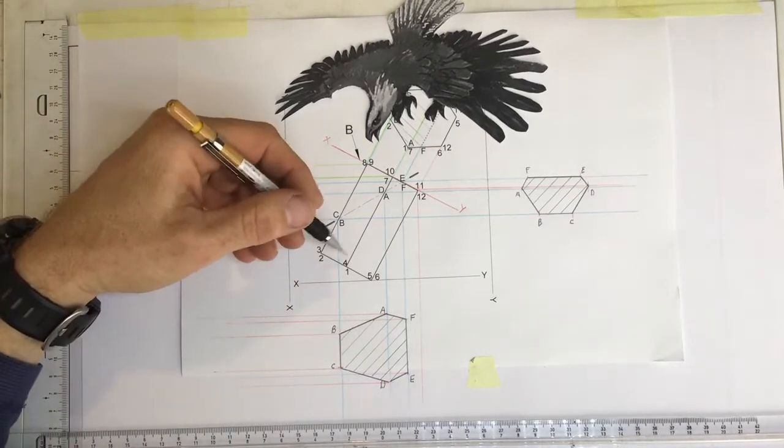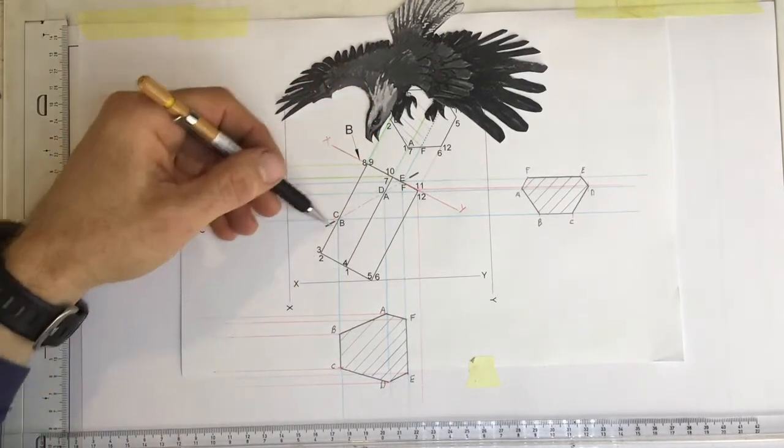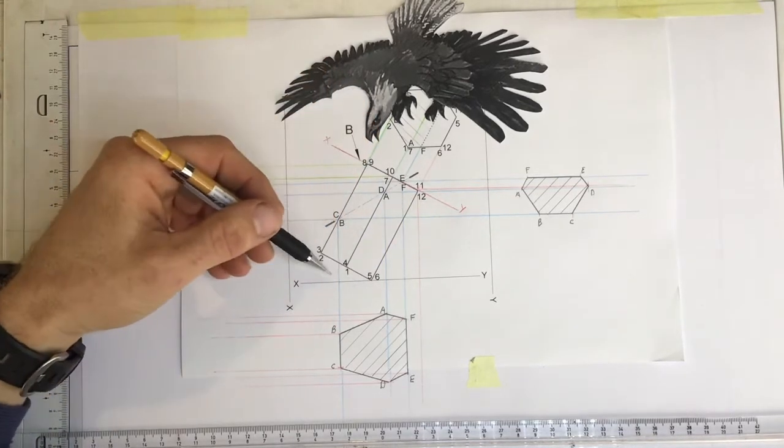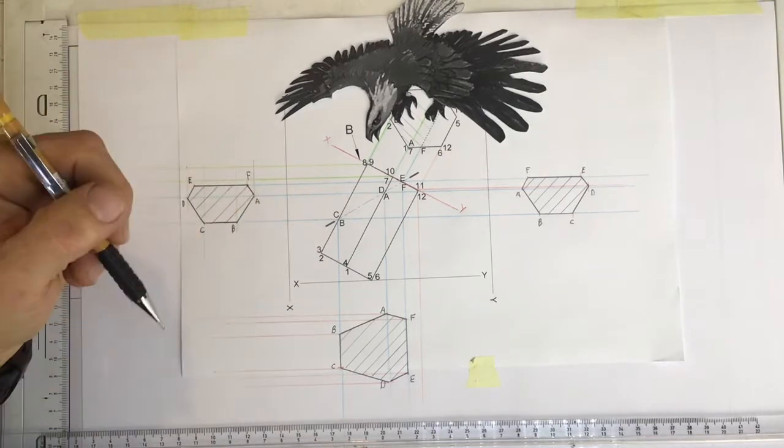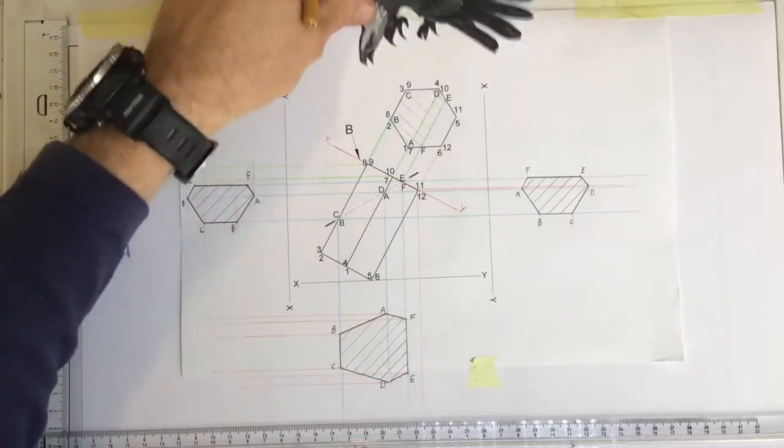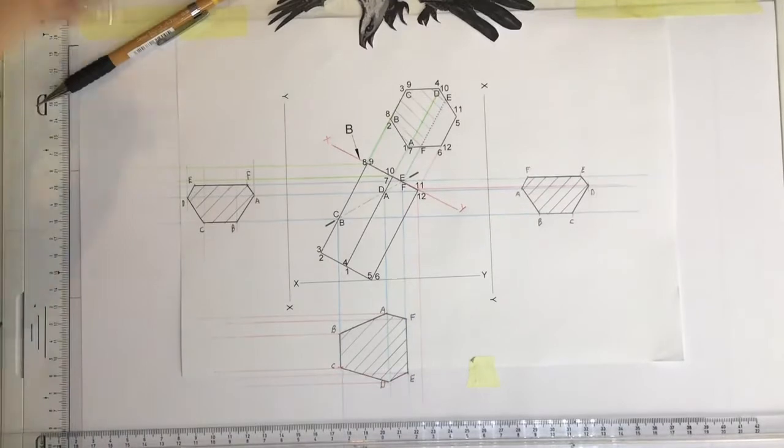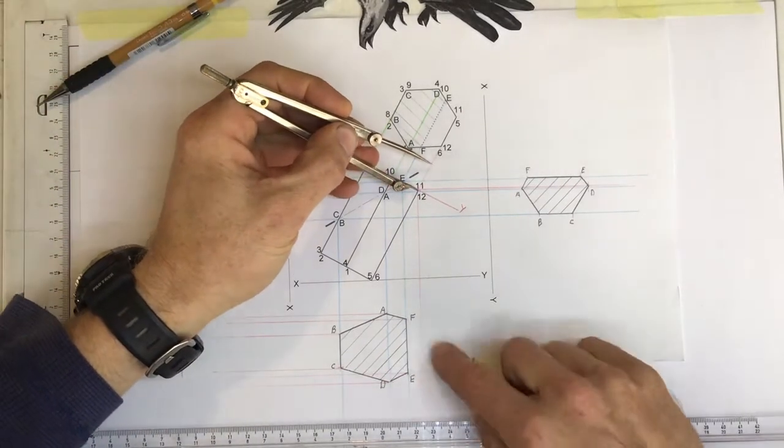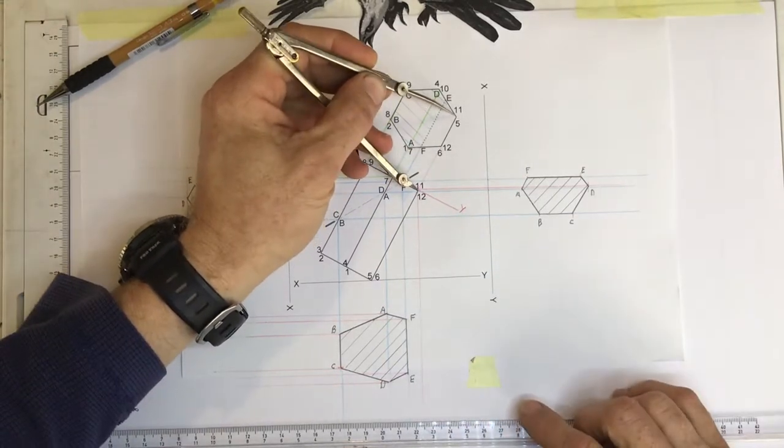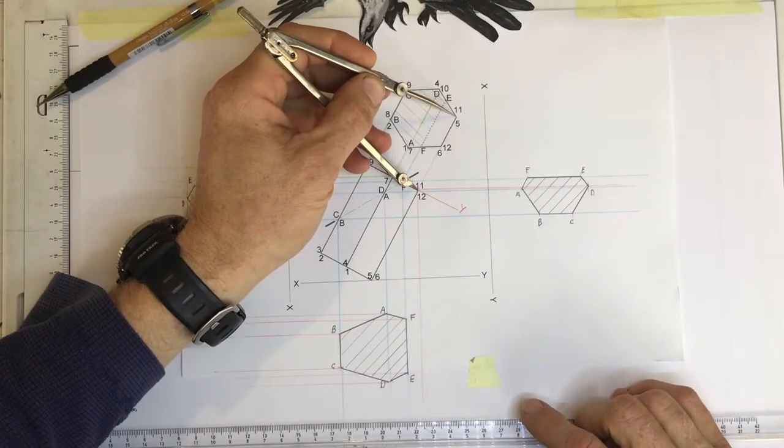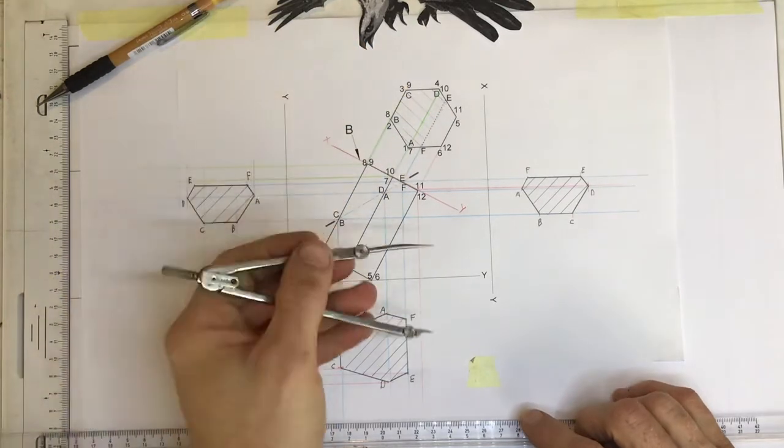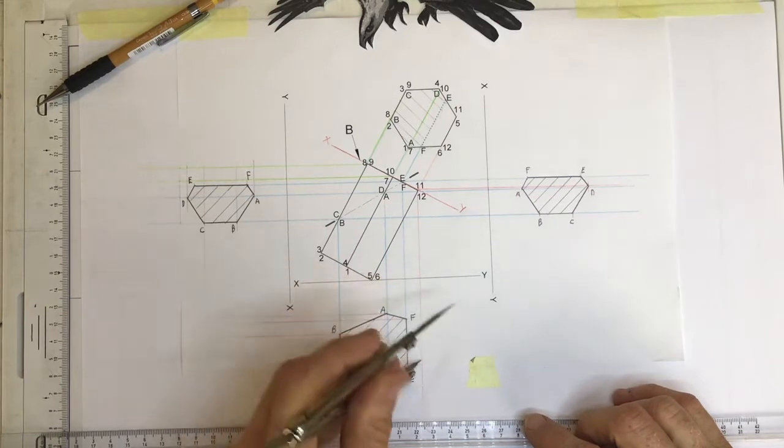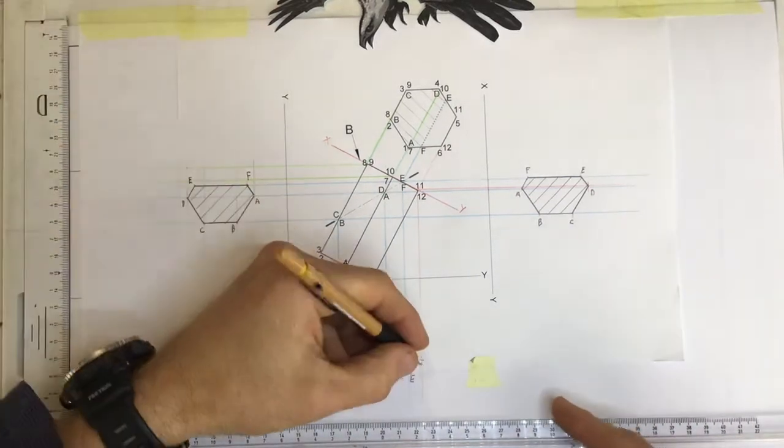What we do still need to draw is the bottom part of this. So I need to have 11 and 12, 5, 6, 1, 4 and 3, 2 drawn over here. First thing that I'm going to do is I'm going to transfer the points of 12 and 11 to this drawing of the top view over here. I'm going to take the distance from the xy axis to 11, come over here, find 11, go down to the new xy axis and place that over there and mark that off as 11.